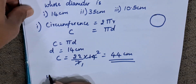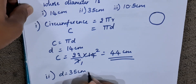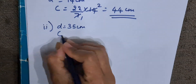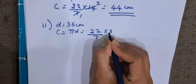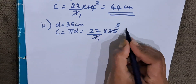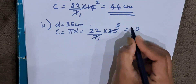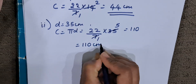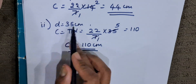Now we will find the circumference of a circle whose diameter is 35 centimeters. Using the formula, circumference = πd = 22/7 × 35. We simplify: 7 ones are 7, 7 fives are 35, giving us 22 × 5. Multiplying: 5 twos are 10, 5 twos are 10 — that gives 110. The circumference of the circle whose diameter is 35 centimeters is 110 centimeters.